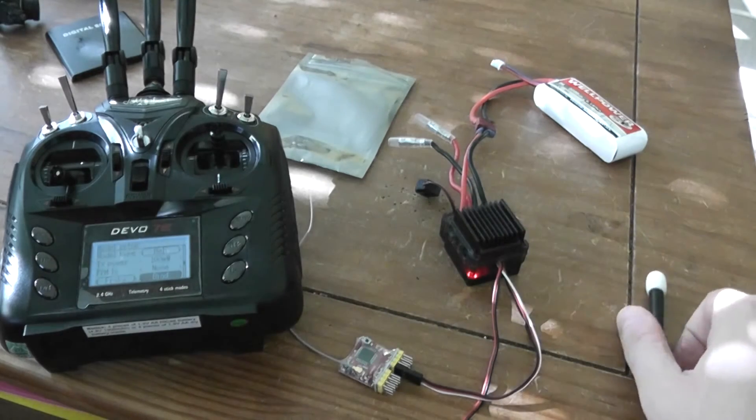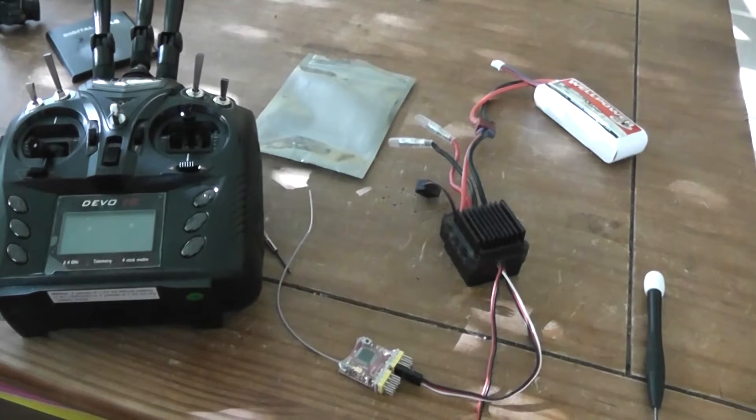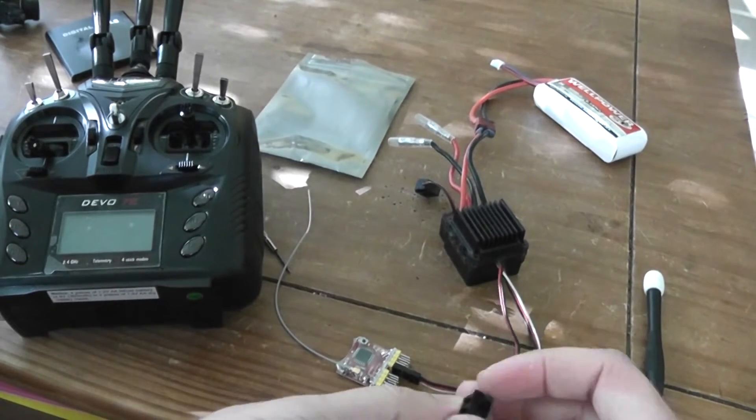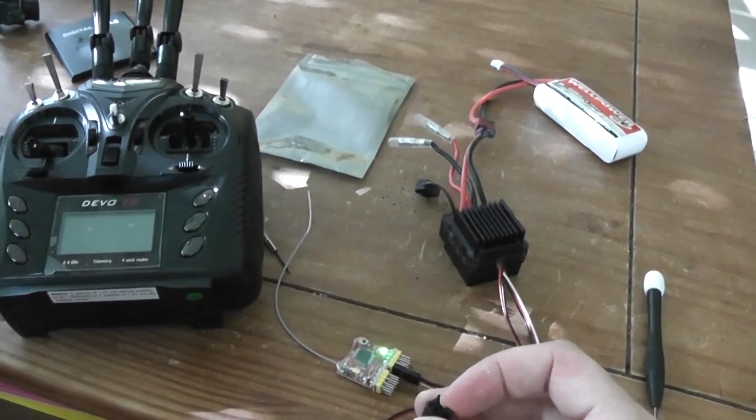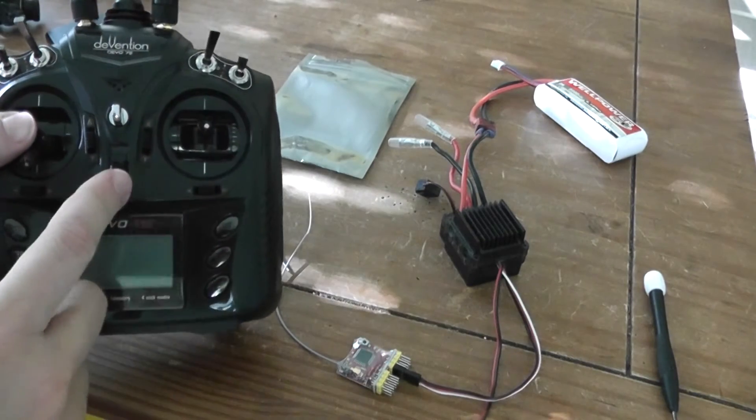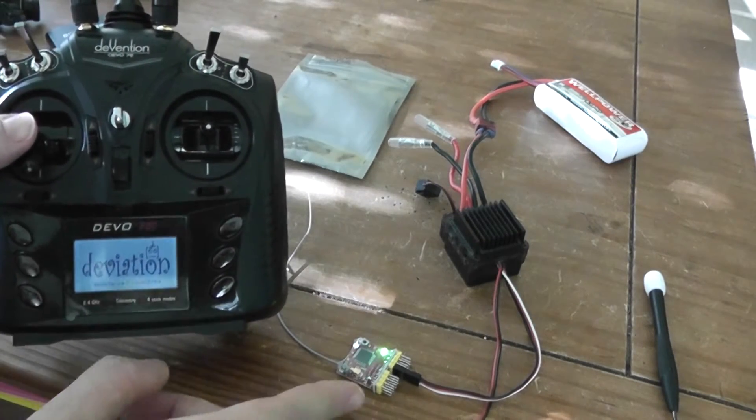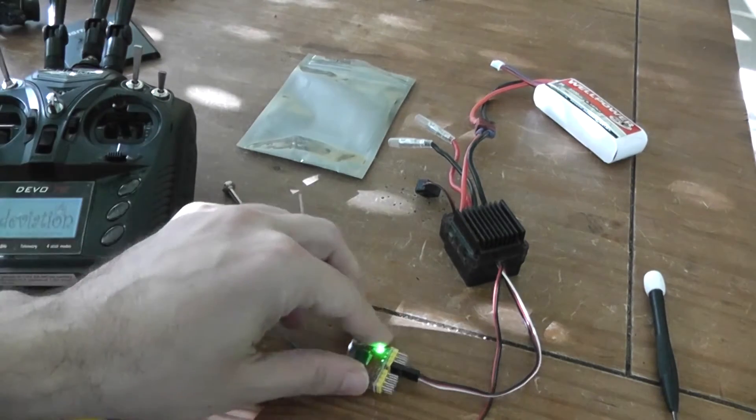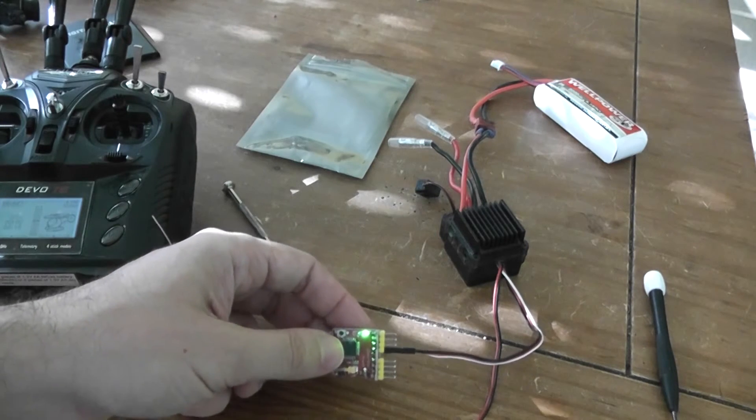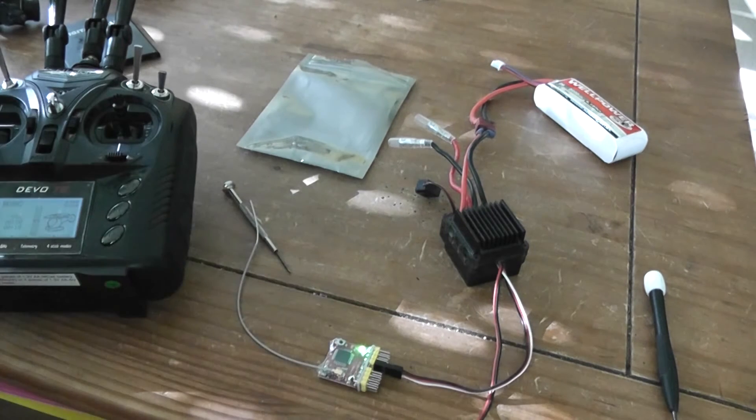You can release, turn off the radio, turn off the receiver, restart the receiver. And now if I turn on the radio, you will see immediately the LED become solid, green solid, so it means it's bound. So it's working perfectly.